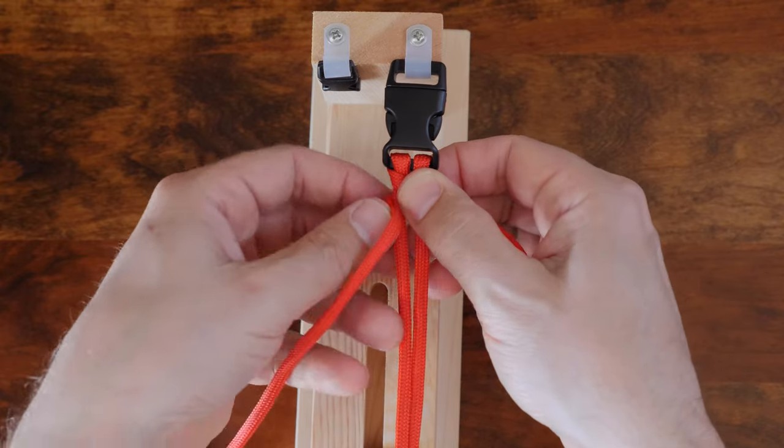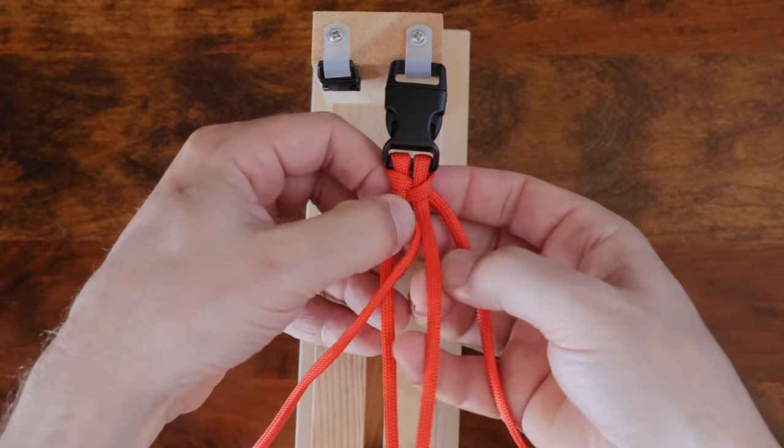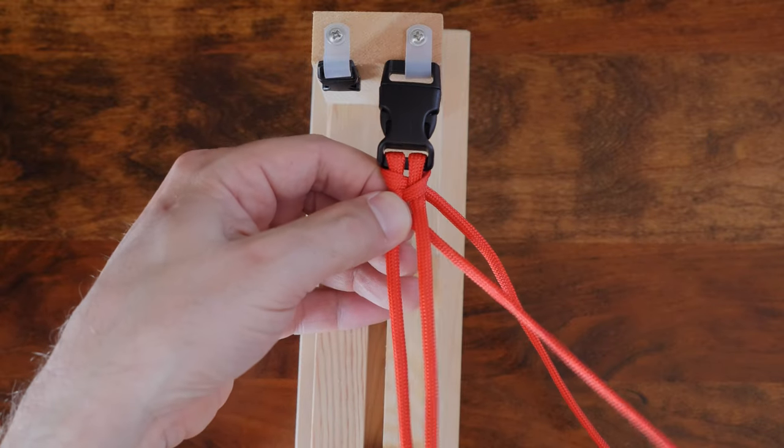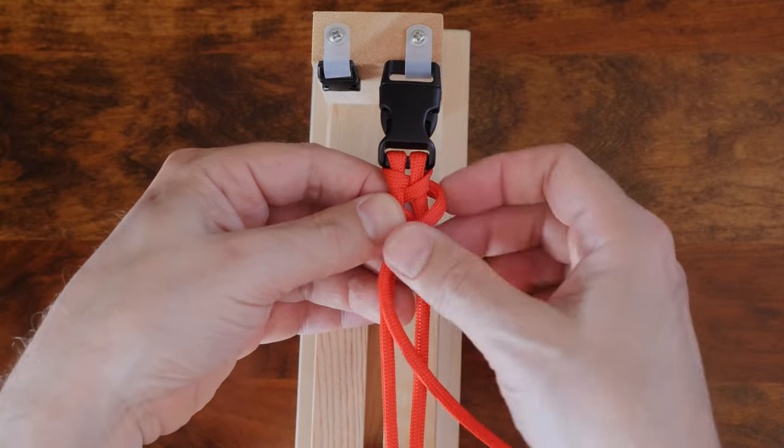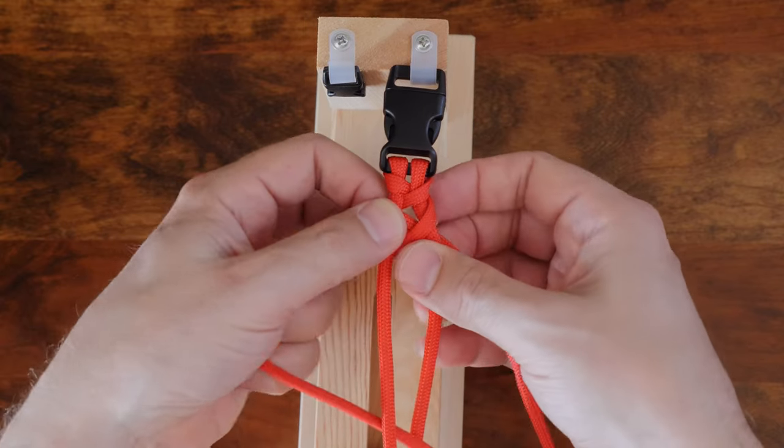Again, our left strand passes over our left center cord and then under our right center cord. Followed by our right strand over our right center cord and then under our left center cord.